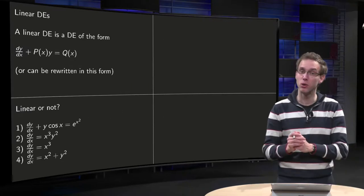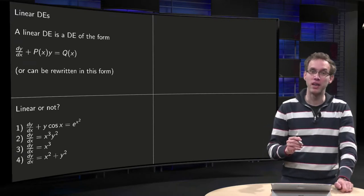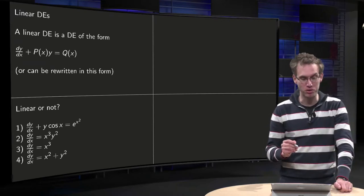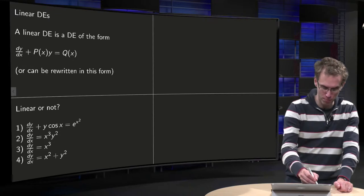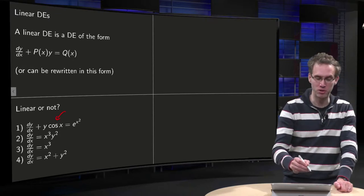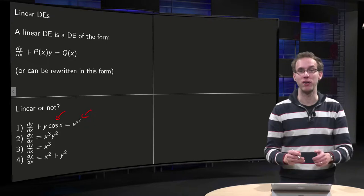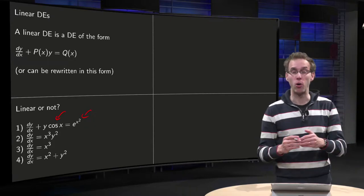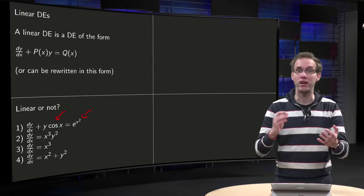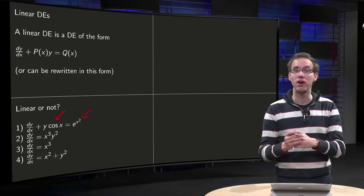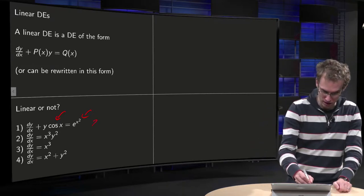Let's take a look at some examples. First example: y' equals y times cosine(x) plus e to the power x squared. In this case we have p(x) equals cosine(x) and q(x) equals e to the power x squared. p and q are complicated, but that's okay. The y and y' are linear in the equation, so this one is linear.